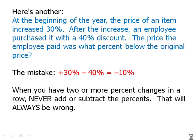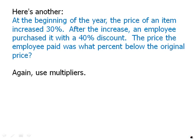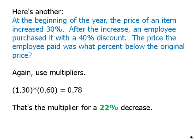Instead, we always use multipliers for percent increases and decreases. A 30% increase is a 1.3 multiplier; a 40% decrease is a 0.6 multiplier. We multiply those two multipliers together: 1.3 × 0.6 = 0.78. A multiplier of 0.78 represents a 22% decrease. So the price the employee paid was 22% less than the original price.